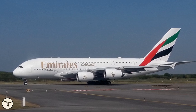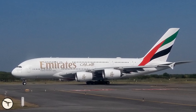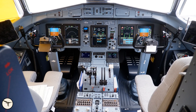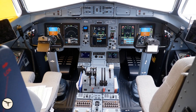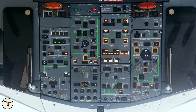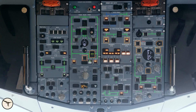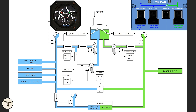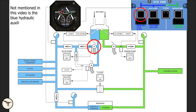Modern airliners are intricate machines with systems designed to work in harmony. To ensure critical systems remain operational after a failure, the aircraft have one or two additional units as backup. For example, we have three airspeed indicators, three altimeters, and two hydraulic systems, each powered by a dedicated pump.